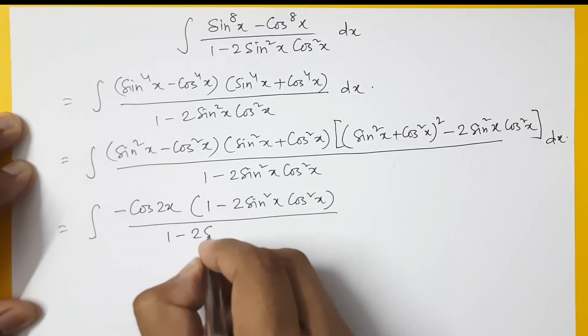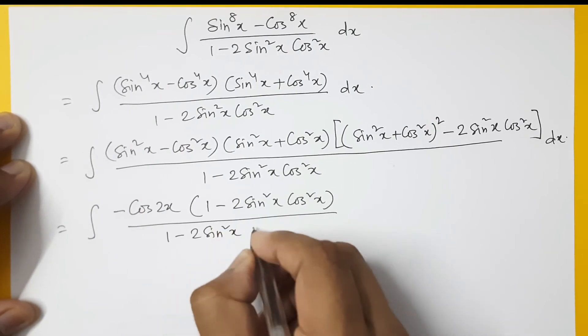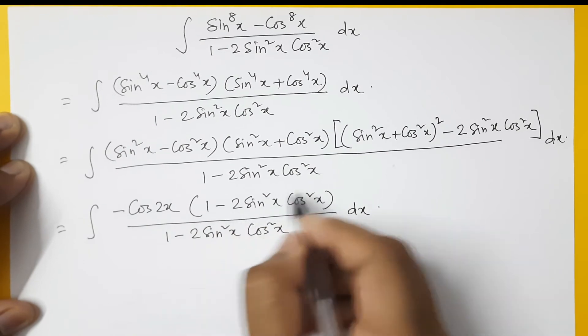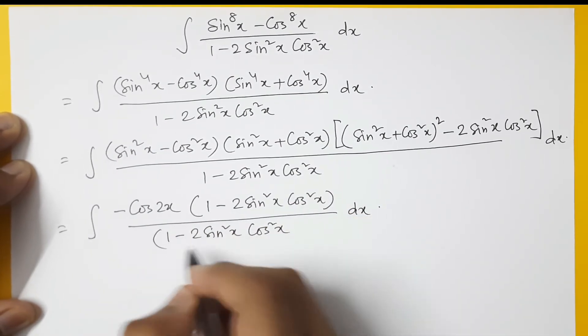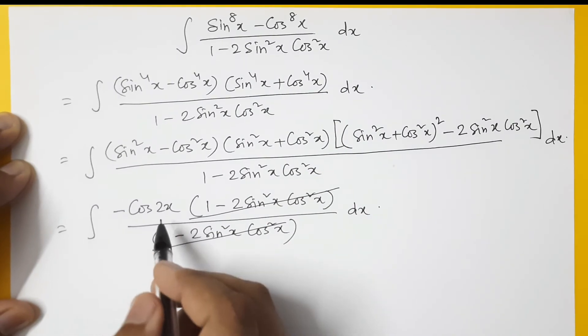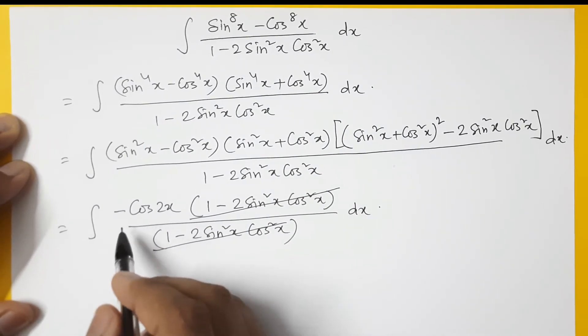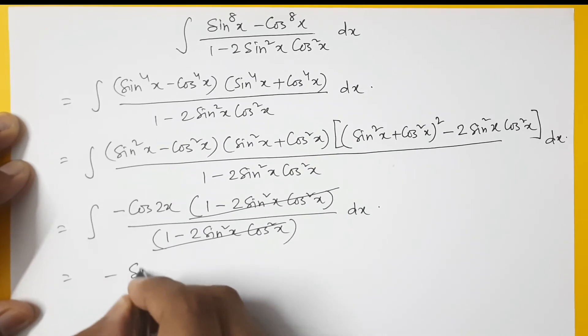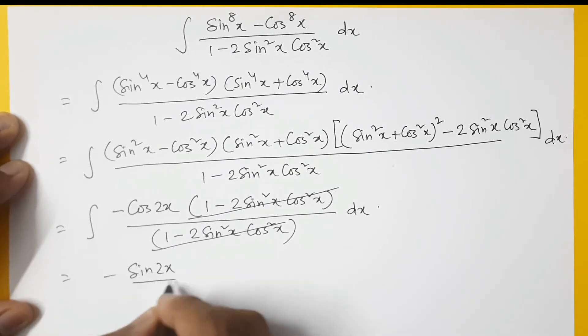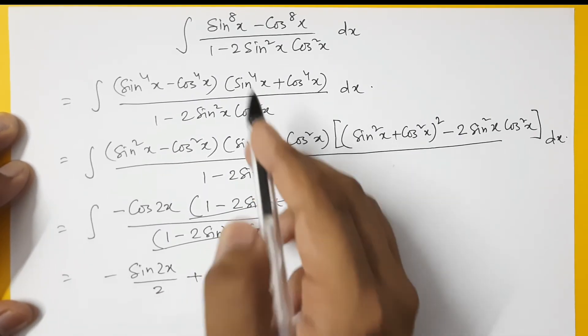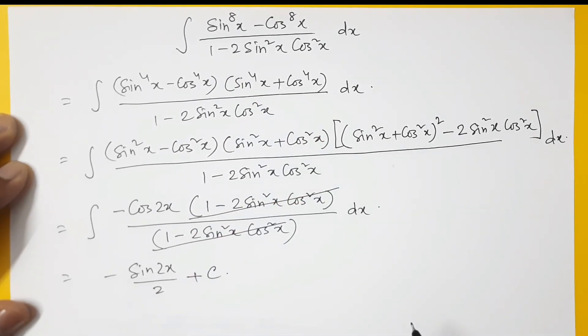So sin²x cos²x and dx. So this term will get cancelled. So let's cancel it, and this is just simple integration of cos 2x. So the answer will be -sin 2x / 2 + C. C is the integration constant. C will come because this is an indefinite integral.